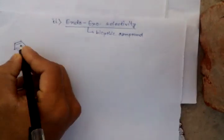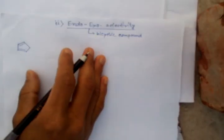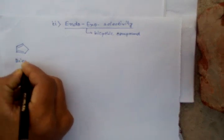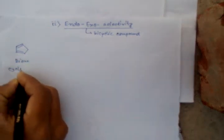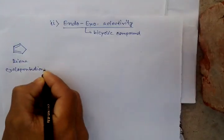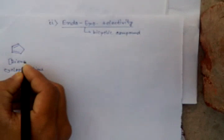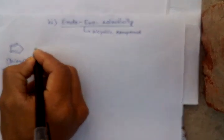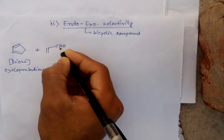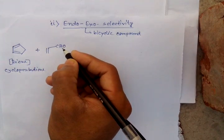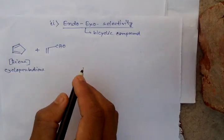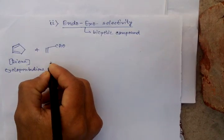Cyclopentadiene acts as diene and dienophile with CHO, and it acts as dienophile.